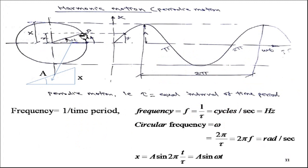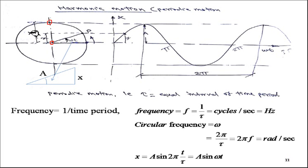To understand SHM further, consider a point P rotating along a circle. We observe the motion of point P along the diameter of the circle — this is the oscillation. The mean position is the center; the maximum upper position occurs at 90°, and the lower most position at 270°. Though the point moves along the circle, we observe its vertical projection along the diameter.